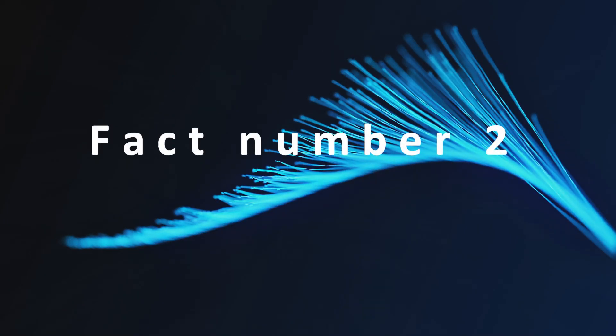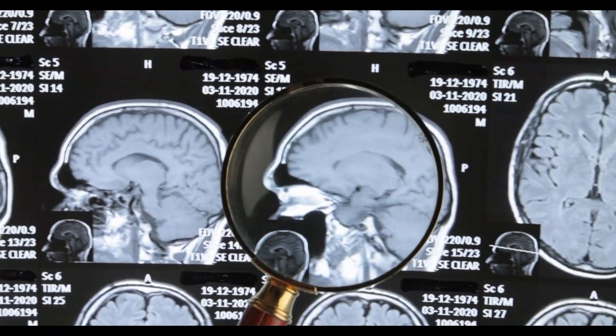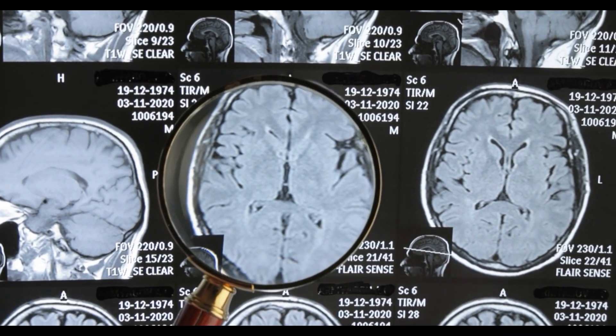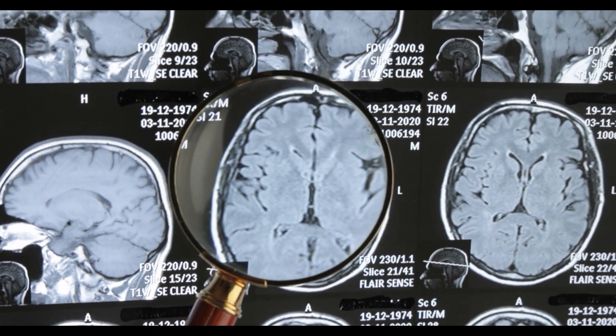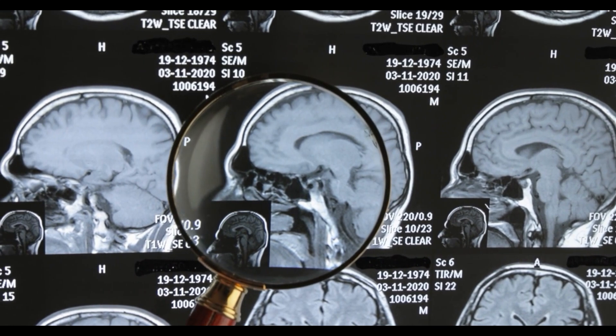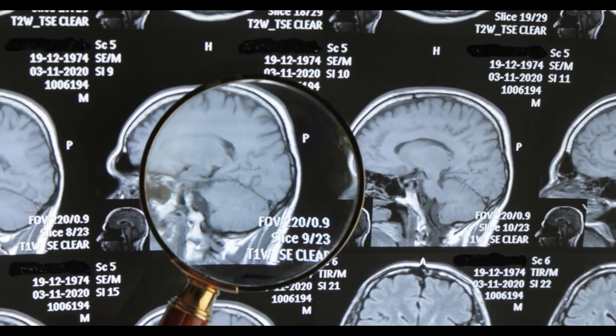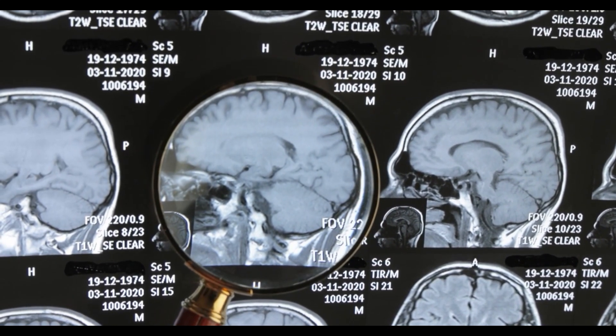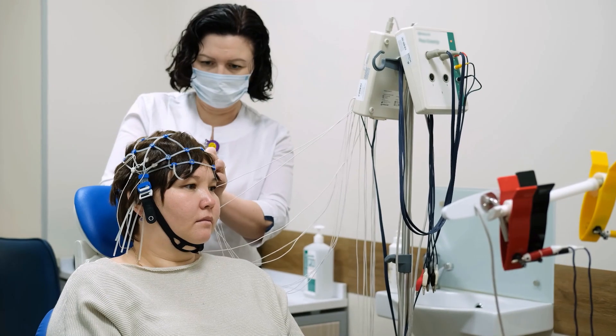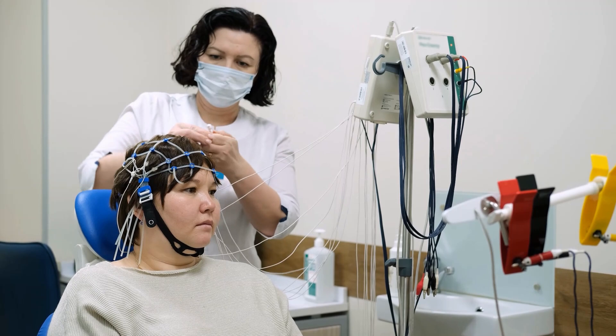Fact number two: despite its modest size, the human brain is a true energy hog. It consumes about 20% of the body's total energy despite comprising only 2% of our body weight. Imagine a tiny two-pound organ guzzling down one-fifth of your daily energy intake. That's your brain, working overtime to keep you functioning, thinking, and feeling. It's like a high-performance supercar, always revving, always ready to go.